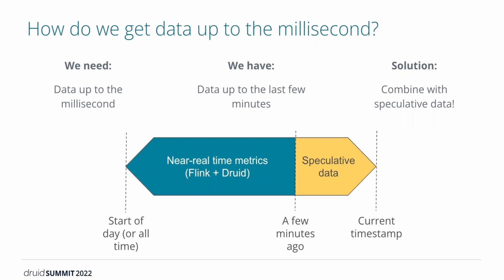Accurate pacing needs data up to the latest millisecond, but because we cut off the query, we only have data up to the last few minutes. Our solution is to combine what's in Druid with speculative data. The query results sent to ad serving show: from the start of the day up until a few minutes ago, near-real-time metrics from Flink and Druid; then from a few minutes ago to the current timestamp, speculative data. This is the same speculative data used in the old system, but now we only have a few minutes of it instead of two hours, so the inaccuracy is much less.